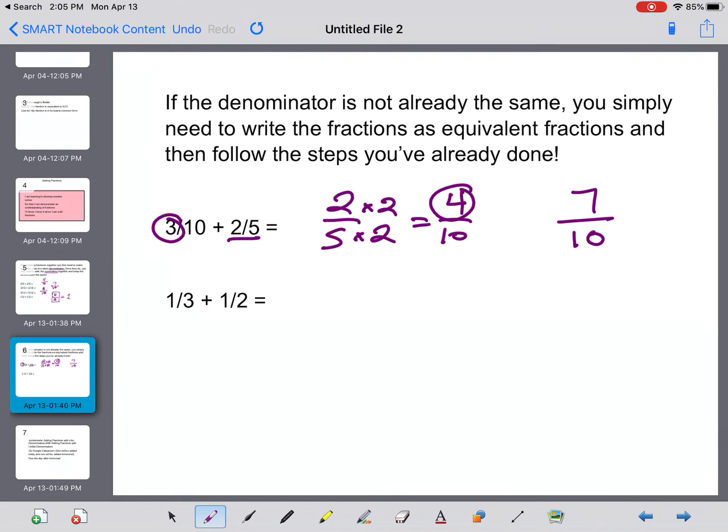Then for 1 over 3 plus 1 over 2, in this case I can't just multiply one fraction. I'm going to have to multiply both of them. So I'm going to start by multiplying this number by 2 and this number by 3. So 1 over 3 times 2 equals 2 over 6 plus 1 over 2 times 3, which equals 3 over 6. And 2 over 6 plus 3 over 6 equals 5 over 6.